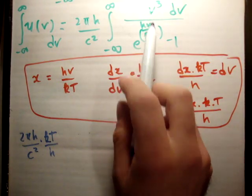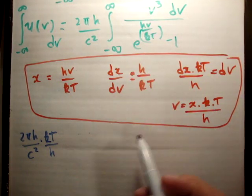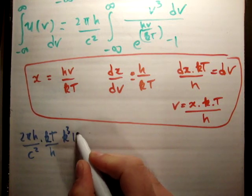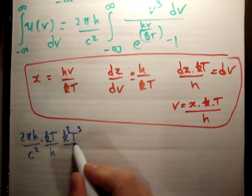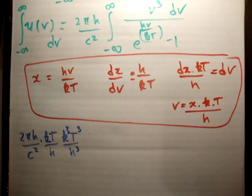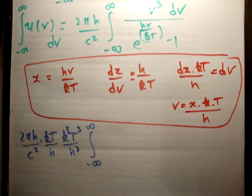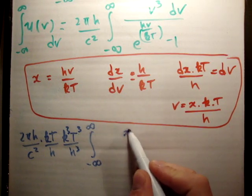For nu cubed, we also have the constant kT over h cubed, so we get k cubed T cubed over h cubed. Next, we put in our integral from negative to positive infinity: x cubed over (e to the x minus 1), integrated dx.